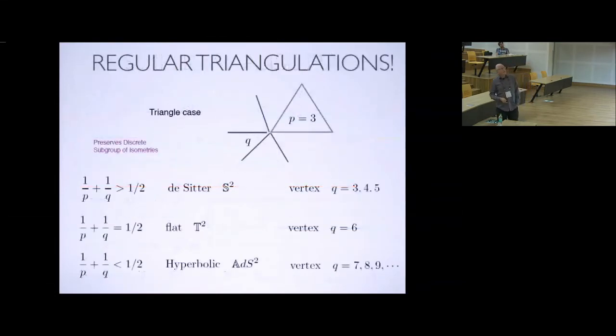Now, having said that, let me start with the most regular lattice. This is just for your amusement. If you build something out of a triangle, so p is equal to 3, then the rule is that 1/p and 1/q has got to be greater than a half, where q is the number of lines that come into the vertex.